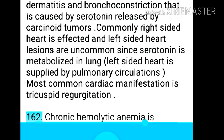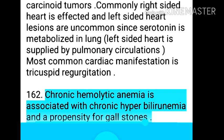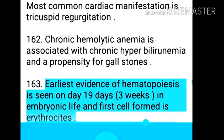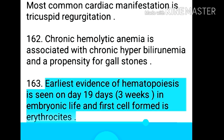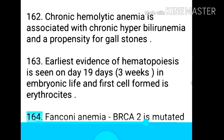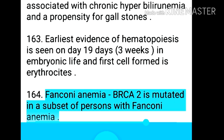Commonly right-sided heart is affected and left-sided heart lesions are uncommon since serotonin is metabolized in the lung. Left-sided heart is supplied by pulmonary circulations. Most common cardiac manifestation is tricuspid regurgitation. Point 163: Chronic hemolytic anemia is associated with chronic hyperbilirubinemia and a propensity for gallstones.